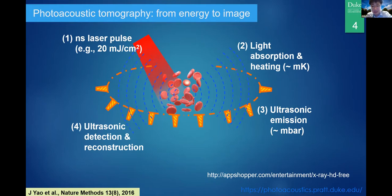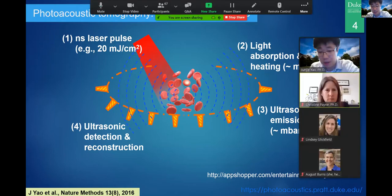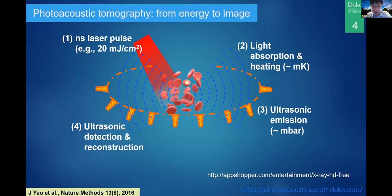The whole photoacoustic imaging process has two parts: optical excitation at the very beginning, and ultrasound detection. So it hybrids both the optical absorption contrast of optical imaging modalities and the high-resolution, deep-penetration capability of ultrasound detection, because ultrasound is much more transparent in biological tissues — as we know from ultrasound images in hospitals.